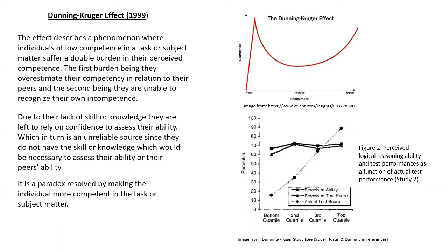The Dunning-Kruger effect was a study conducted in 1999. The effect describes a phenomenon where individuals of low competence in a task or subject matter suffer a double burden in their perceived competence. The first burden: they overestimate their competency relative to their peers. The second: they are unable to recognize their own incompetence. Due to their lack of skill or knowledge, they rely on confidence to assess their ability, which is an unreliable source. It is a paradox resolved by making the individual more competent in the task.